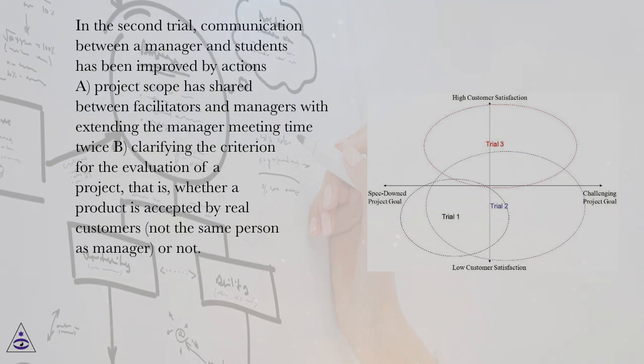In the second trial, communication between a manager and students has been improved by actions A, project scope has shared between facilitators and managers with extending the manager meeting time twice B, clarifying the criterion for the evaluation of a project, that is, whether a product is accepted by real customers, not the same person as manager, or not.